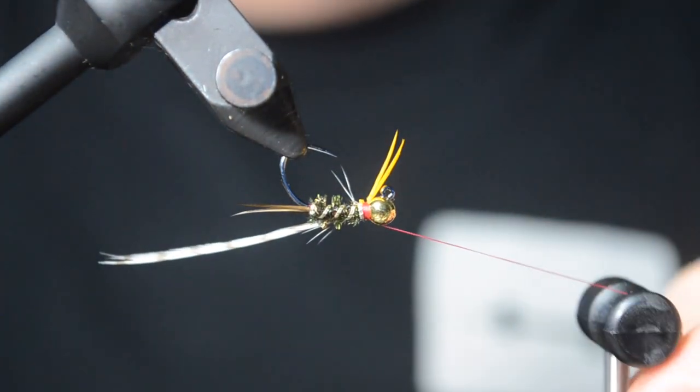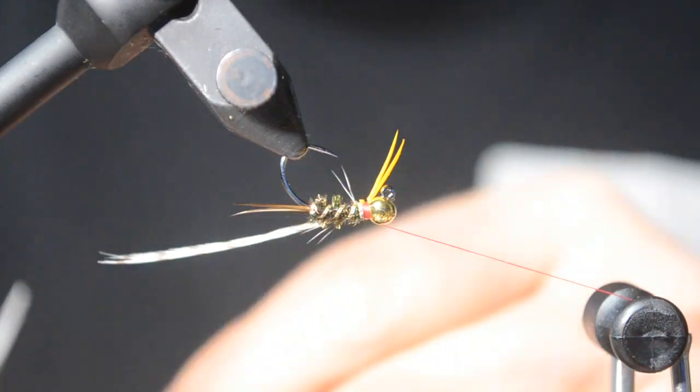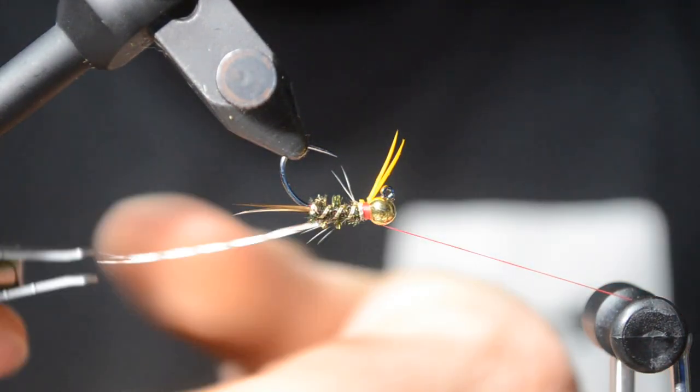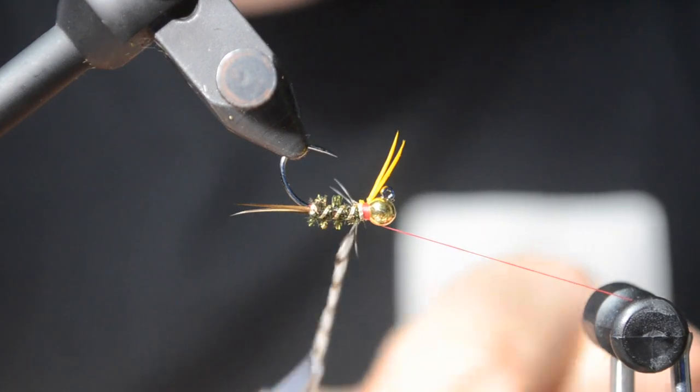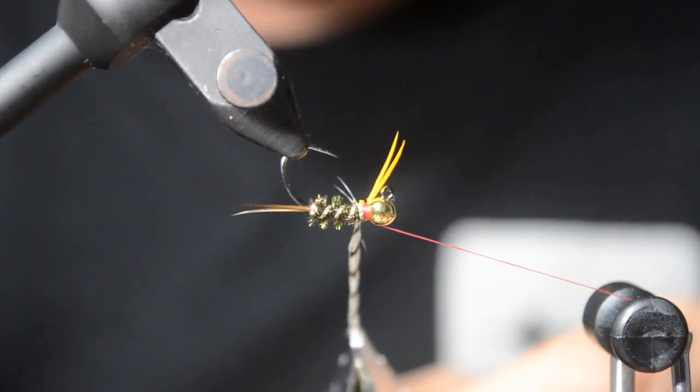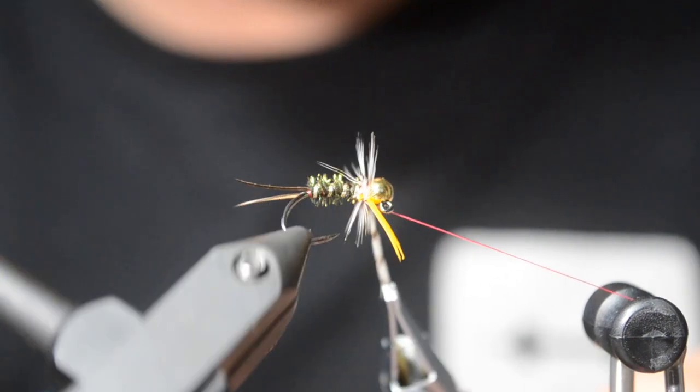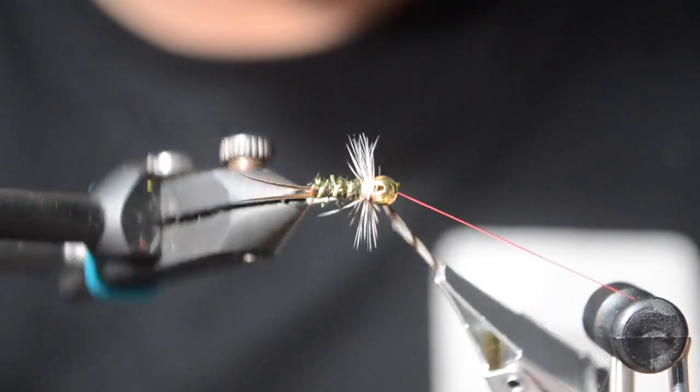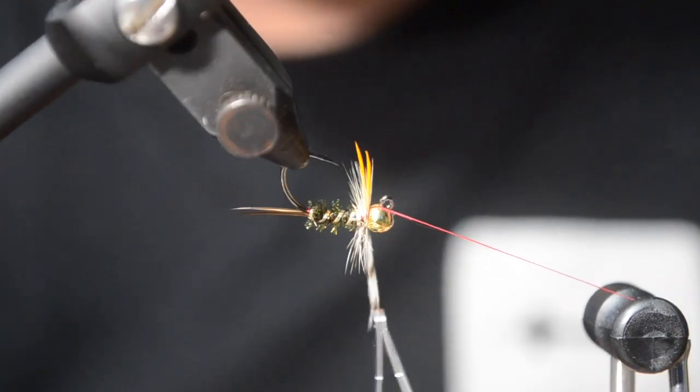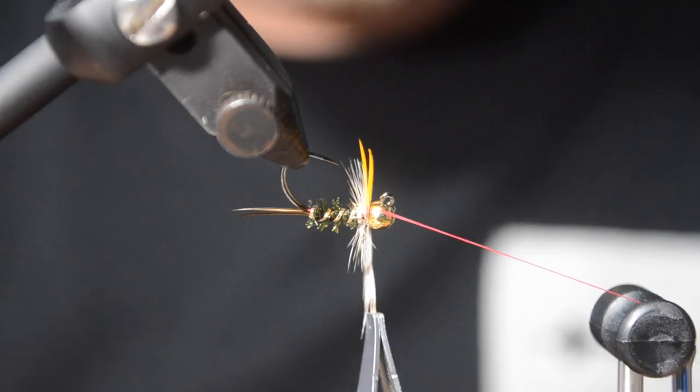Tie in my hackle here. You can use brown, grizzly, whatever you want. Again, experiment. Using the rotary, I'll put about three turns. And then I'll go ahead and lock off the hackle.